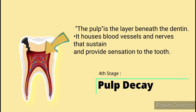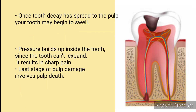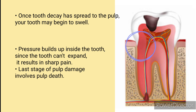Once the tooth decay has spread to the pulp, your tooth may begin to swell. Pressure builds up inside the tooth, and since the tooth can't expand, it results in sharp pain. The last stage of pulp damage involves pulp death.